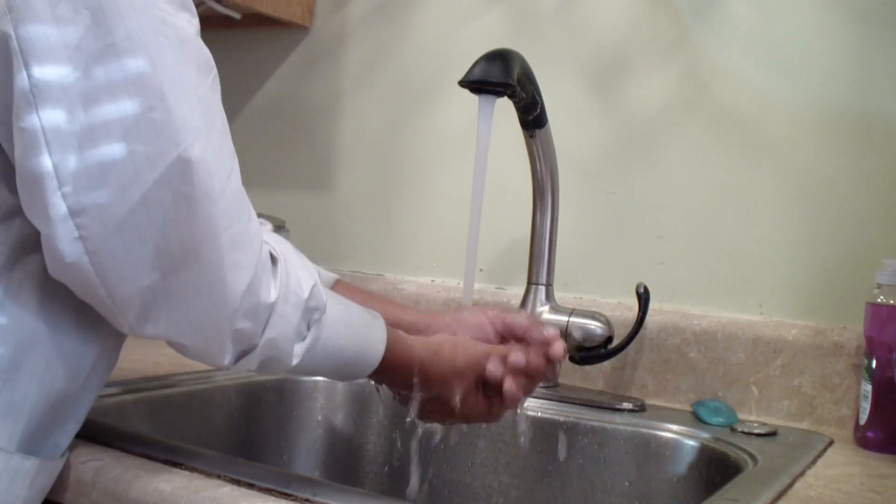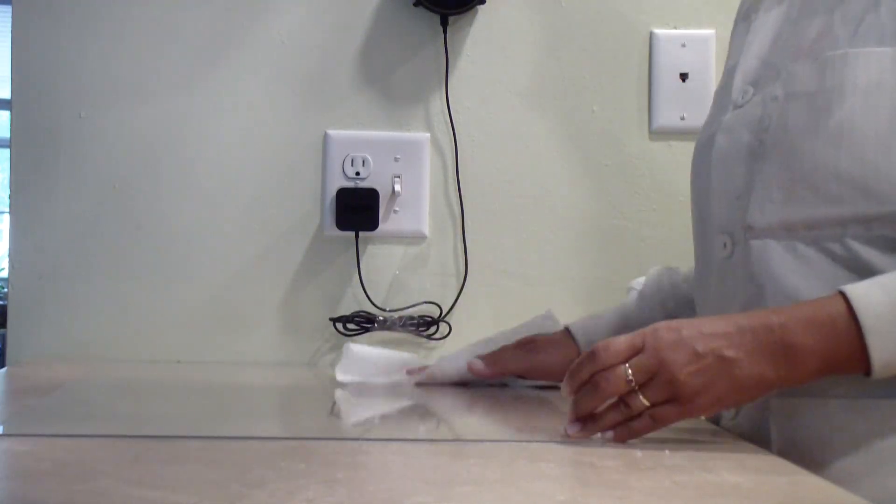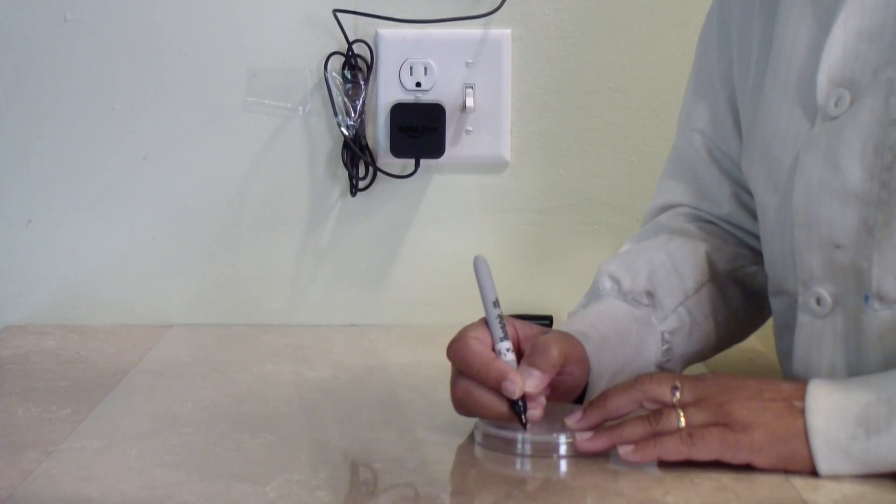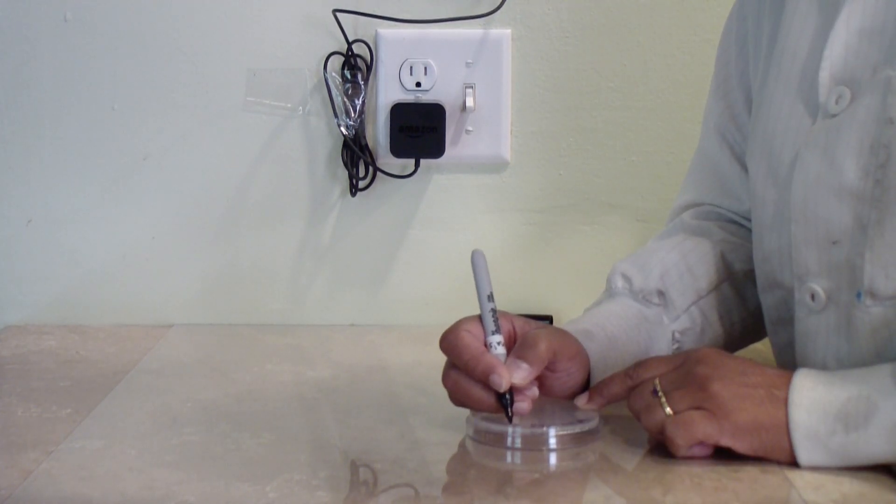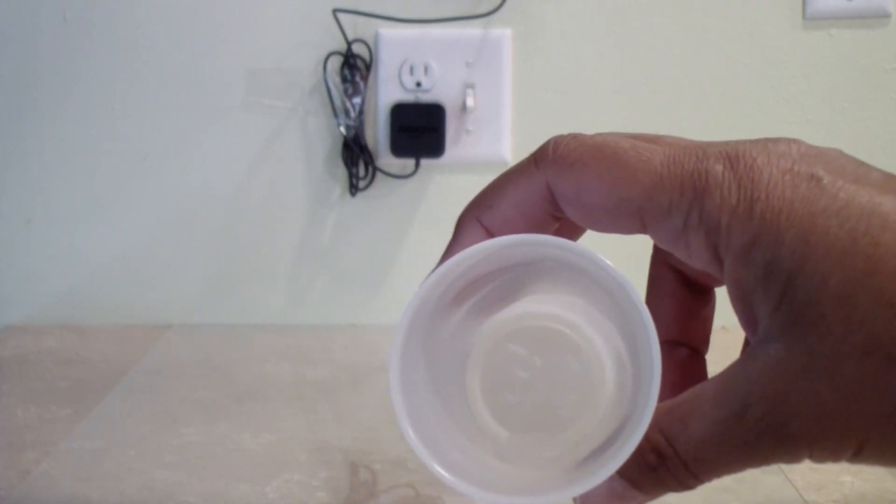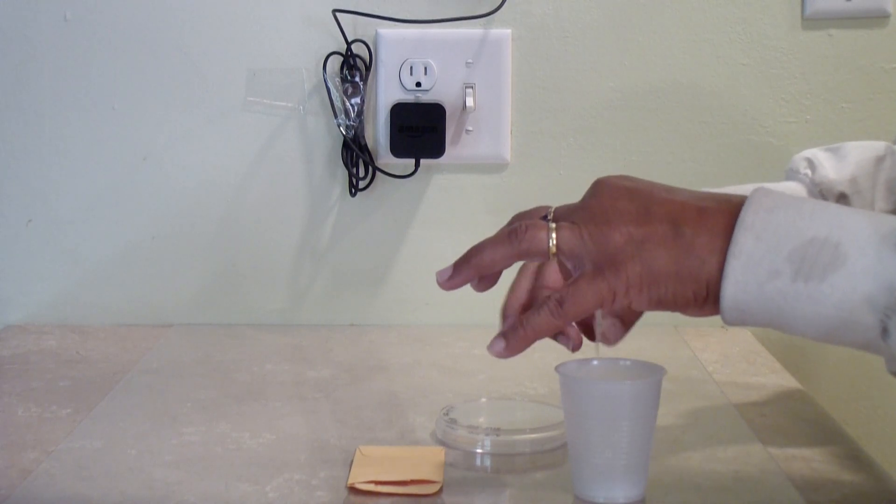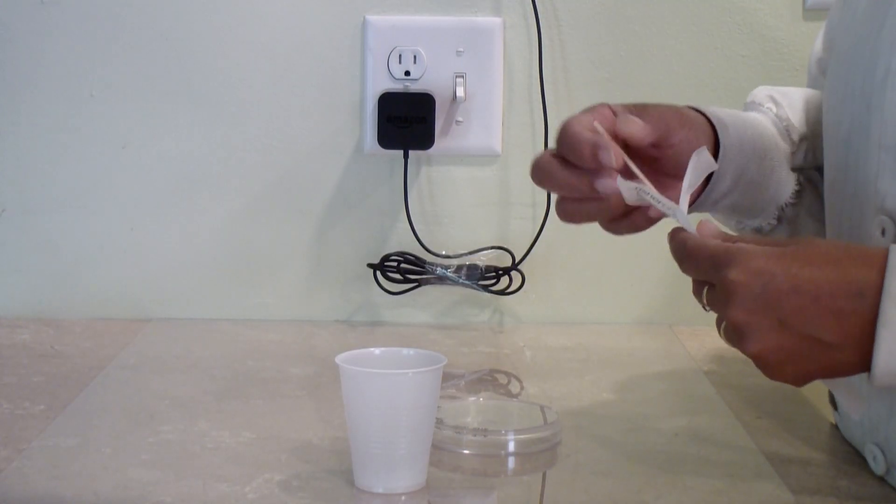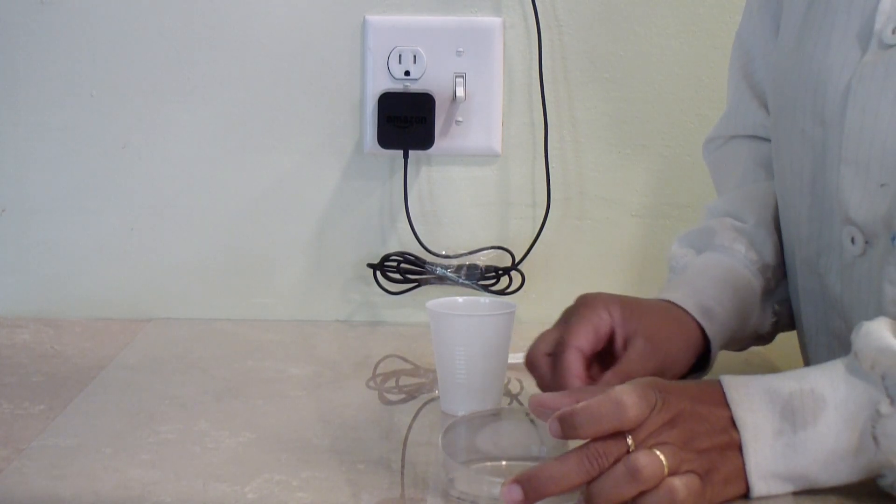As always, start by washing your hands and wiping down your work area with disinfectant. Turn the PDA plate upside down and label it as explained in a previous tutorial, then turn it right side up again. Add a few drops of water in a cup or a spoon, and mix a few yeast grains with the water. Dip a cotton swab in the mixture and open the lid of the plate just enough to gain access.